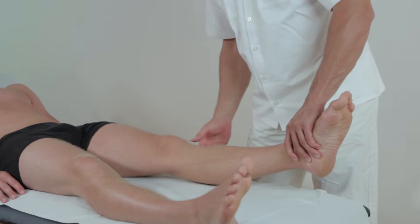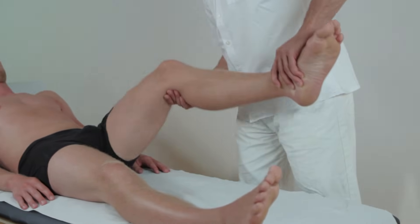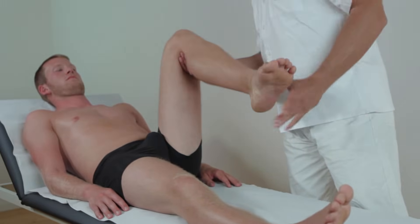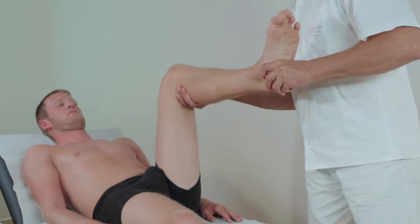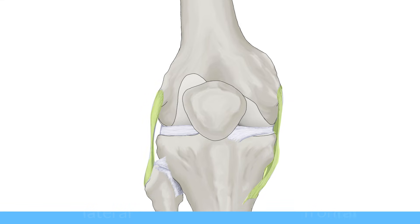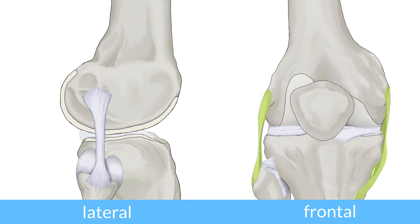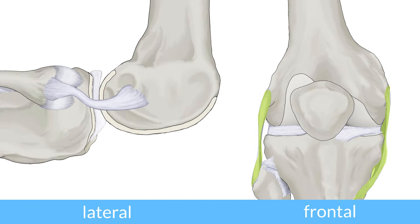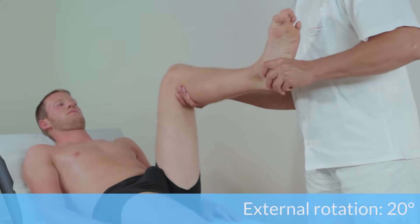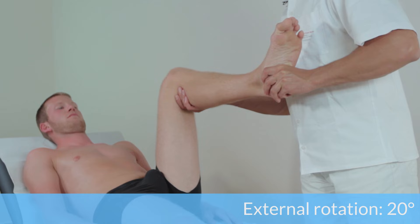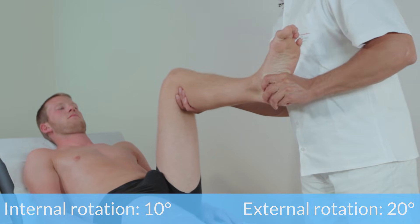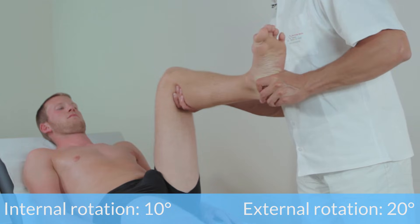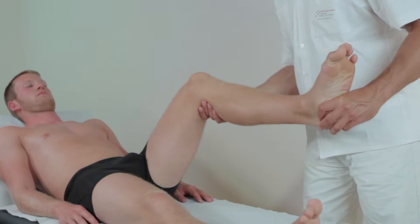Internal and external rotation should be evaluated as well. It is best done with the leg flexed at 90 degrees in both knee and hip. Grasp the heel with one hand and rotate the lower leg with the other. Since both collateral ligaments are relaxed in this position, external rotation of up to 20 degrees and internal rotation of up to 10 degrees should be achievable. Pay attention to pain or mechanical resistance, which can be seen in meniscal tears or if a torn meniscus is trapped.